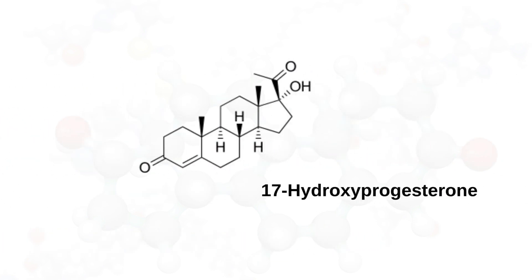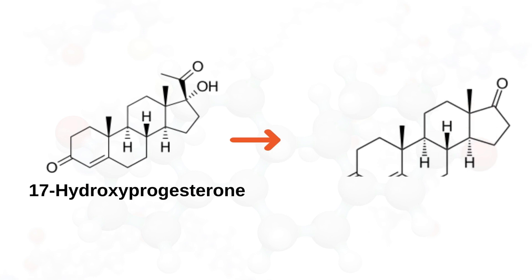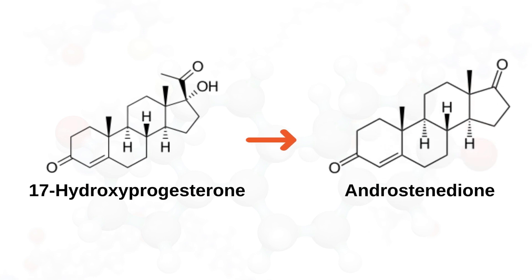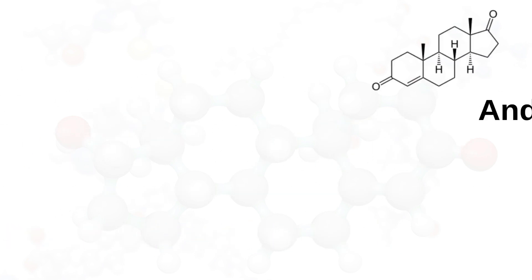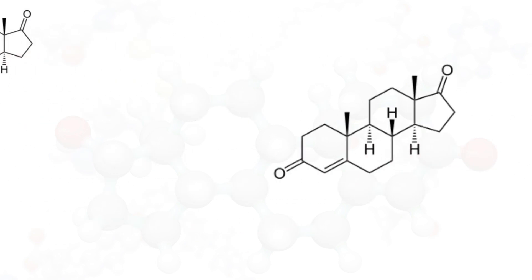17-hydroxyprogesterone is converted to androstenedione, and this reaction is catalyzed by desmolase. Androstenedione is the first androgen to be formed in the steroidogenic pathway.